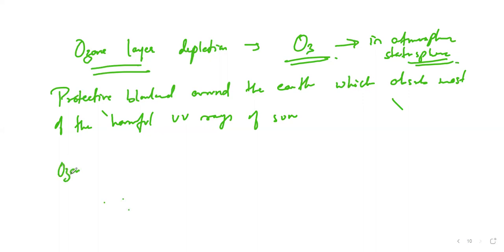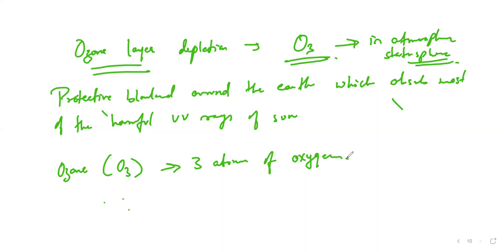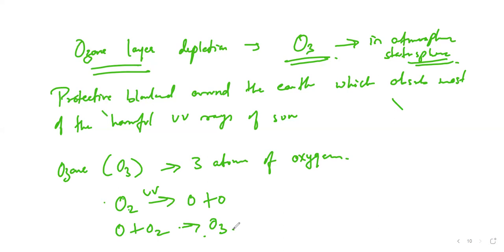If you want to write how it forms: O2 + UV → O + O, then O + O2 → O3. Whenever there is high UV radiation on this oxygen gas, that is when this molecule called ozone is formed.